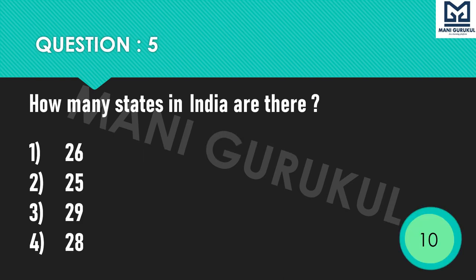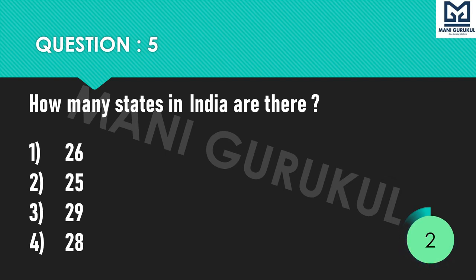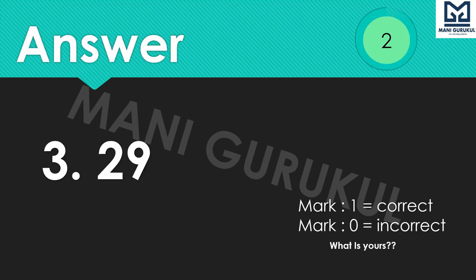Question 5: How many states in India are there? Options: 1st 26, 2nd 25, 3rd 29, 4th 28. Your time starts now. Time's up. Answer is 3rd, that is 29.